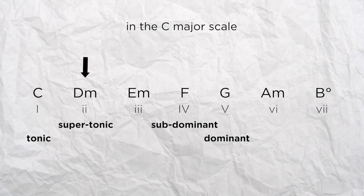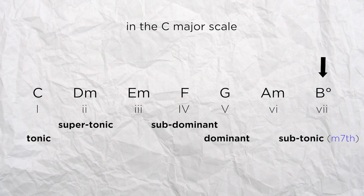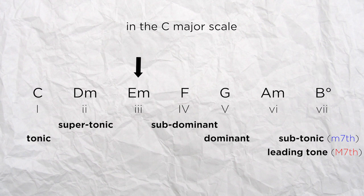Then the second degree is called the supertonic and the seventh degree is either the subtonic if it's a whole tone below the tonic like in a natural minor scale or it's the leading tone if it's a semitone below the tonic like in the major scale. Then the third degree is called the mediant and the sixth degree is the submediant. And it's this mediant that the chromatic mediant term is referring to.